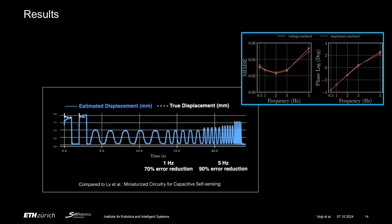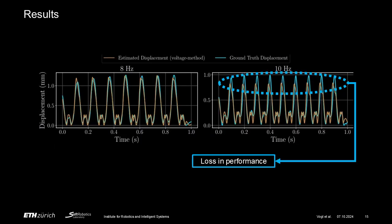This results in one of the two proposed methods being more suitable for different applications than the other. As observed, the estimated displacement shows good overlap with the ground truth, even at actuation frequencies of 8 Hz, with an error of only around 6%. However, there is a drastic loss in performance when increasing the actuation frequency from 8 Hz to 10 Hz, which increases the error from 6% to 14%.